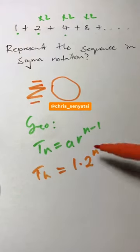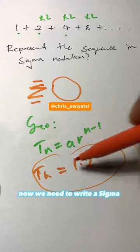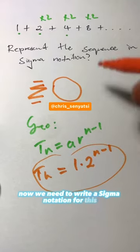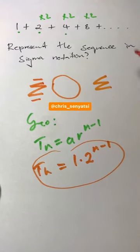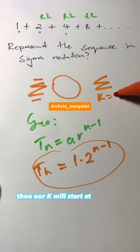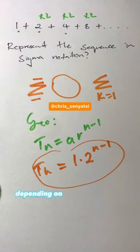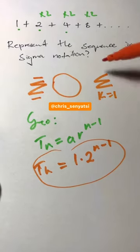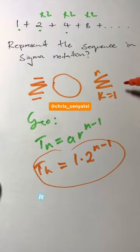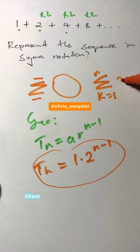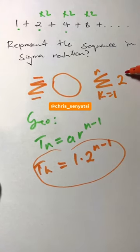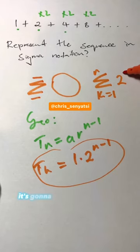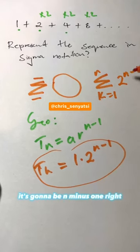This is your Tn. Now we need to write a sigma notation for this. In the simplest form, our variable k will start at 1 (depending on the book you use, I'm using k). Here we need to write n where it ends, and then here we're going to have 2^(n-1).